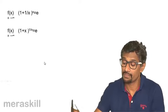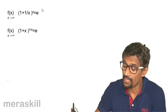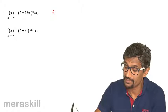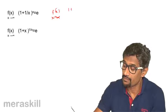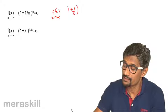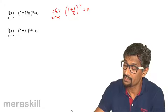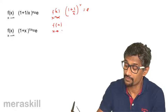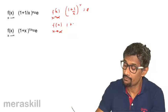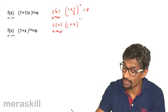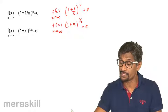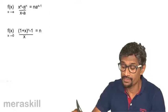Then we have: the limit as x → ∞ of (1 + 1/x)^x equals e. Similarly, the limit as x → 0 of (1 + x)^(1/x) also equals e. In this second form, x must tend to 0.